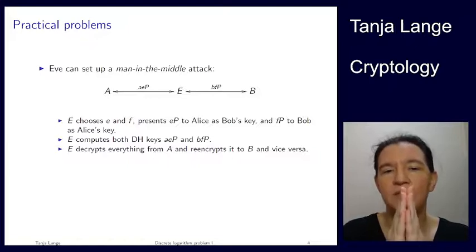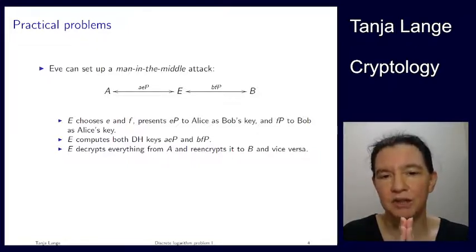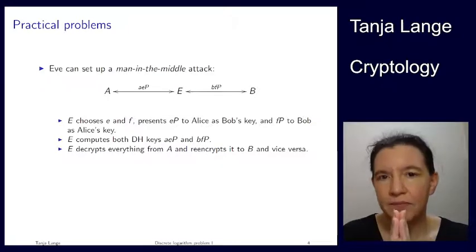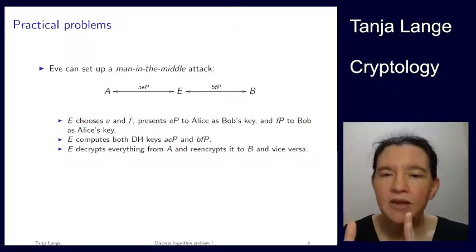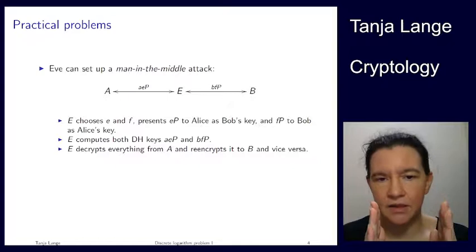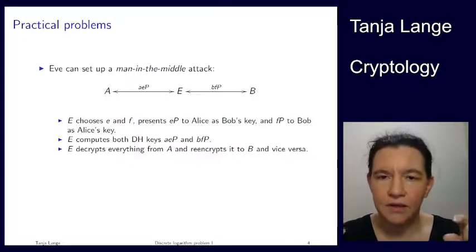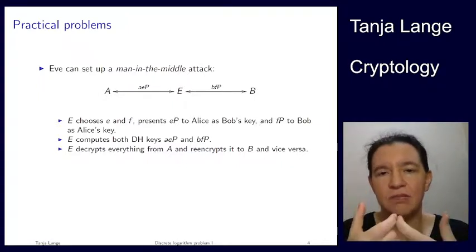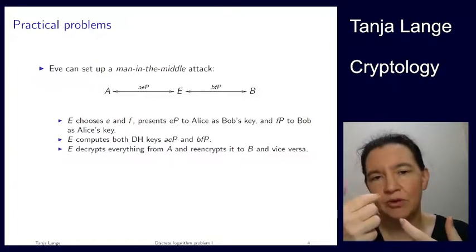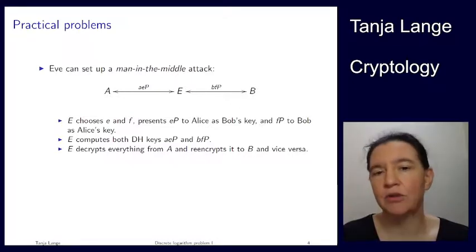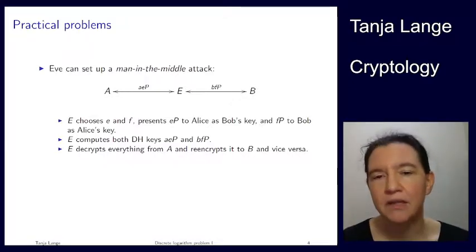If Eve sits in the middle and manages all the conversation, she picks her own keys E and F (they can be the same or different). She sends EP to Alice claiming it's Bob's key, and sends FP to Bob claiming it's Alice's key. Both Alice and Bob think they have a key from the other party, while they actually have keys shared with Eve. So Alice computes AEP and Bob computes BFP, and Eve is able to compute both of these shared keys because she got the real keys from Alice and Bob.